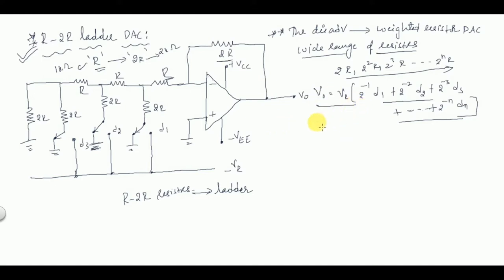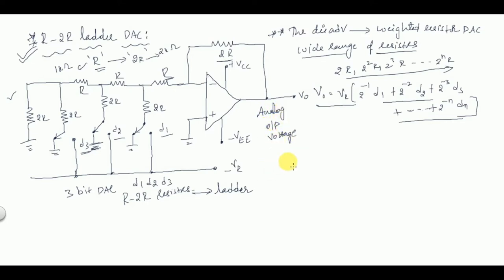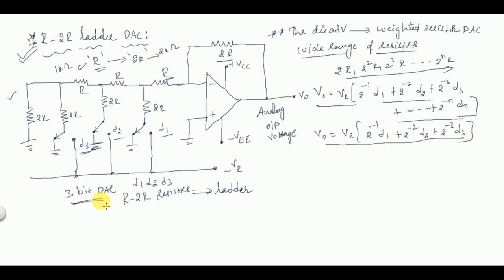For simplification, I have taken a three-bit DAC in this block diagram, with inputs D1, D2, and D3. The reference voltage is −Vr and the analog output voltage is V0. So for a 3-bit DAC, V0 = Vr × (2⁻¹·D1 + 2⁻²·D2 + 2⁻³·D3).